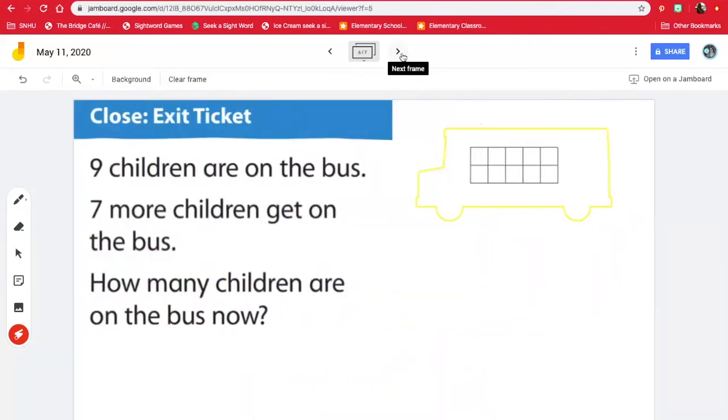Here's our last problem for today. It says nine children are on the bus. Oh my goodness. There's lots of kiddos going to school today. So how many children are on the bus? Nine. Seven more children get on the bus. So we know that seven more get on the bus. And the question's asking, how many children are on the bus now?